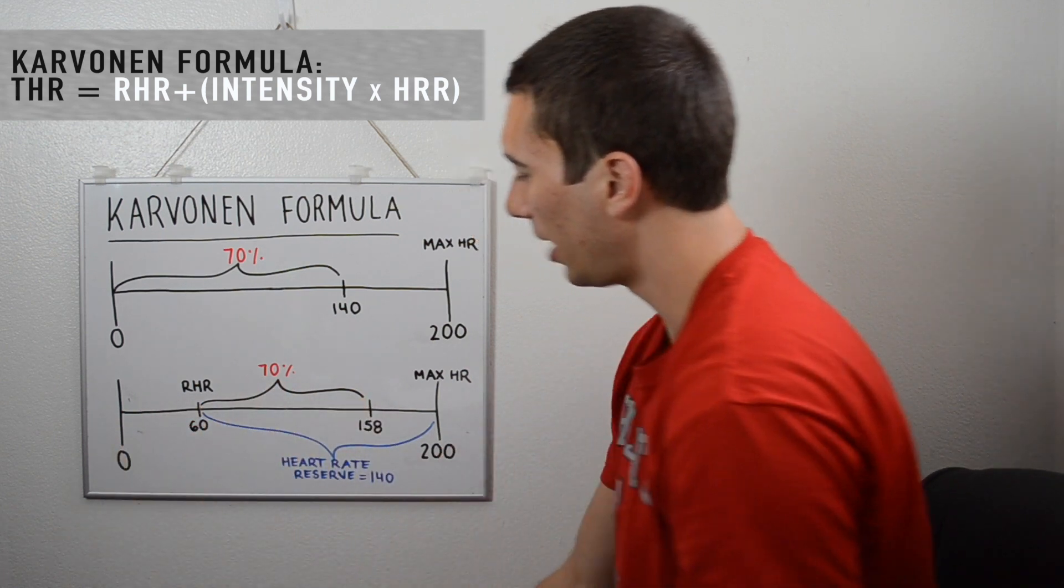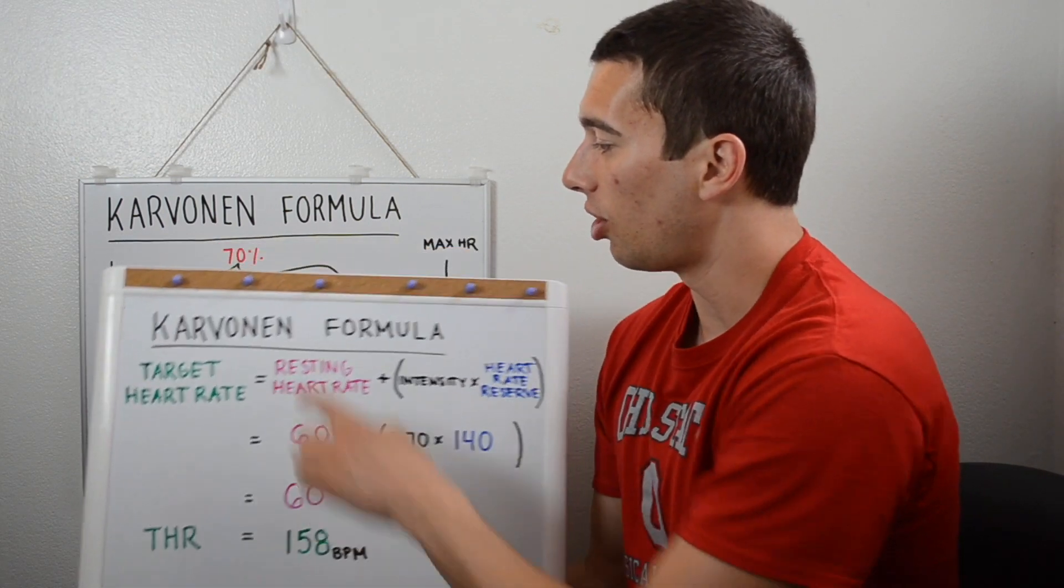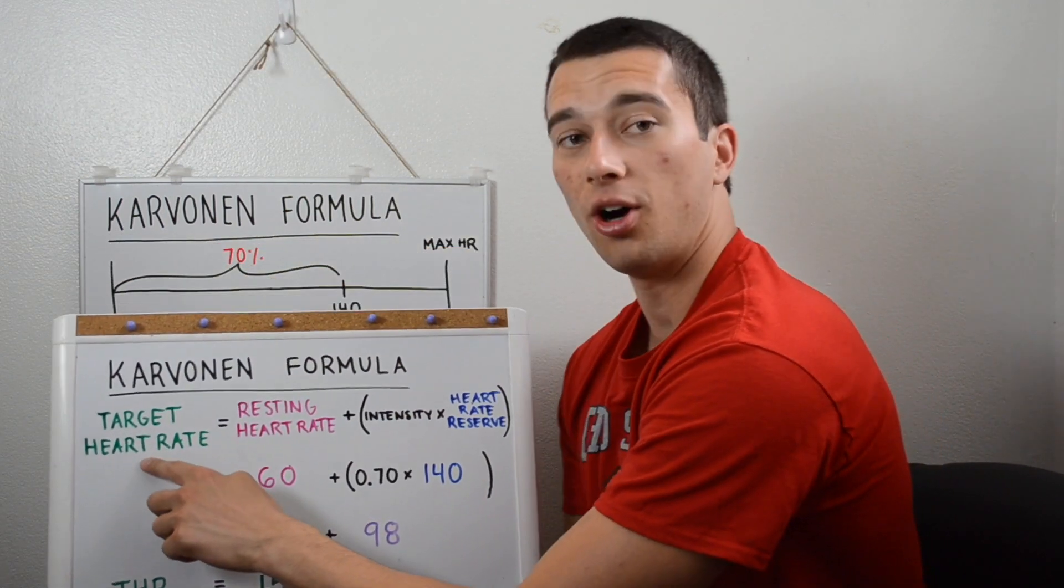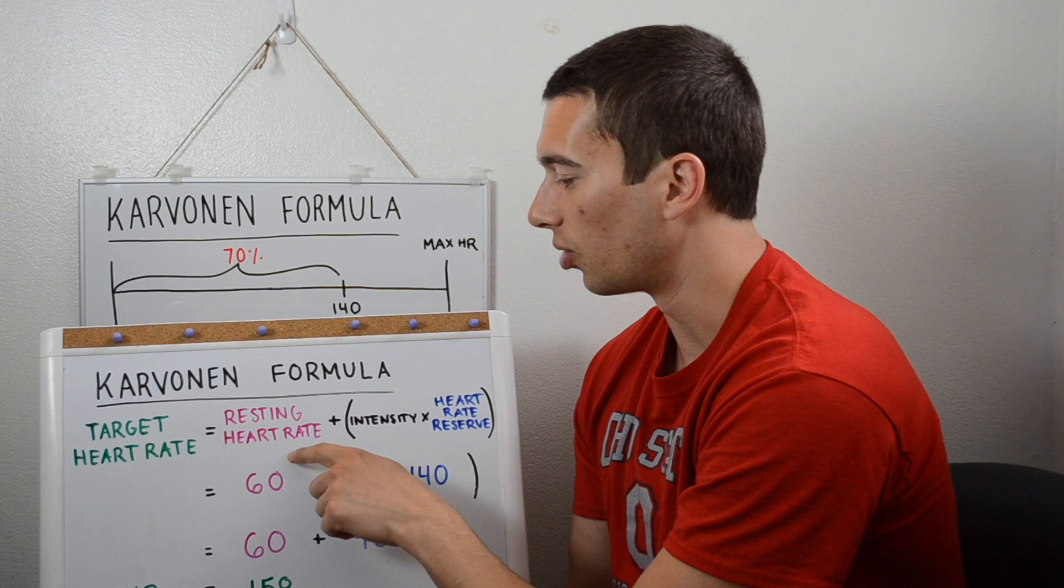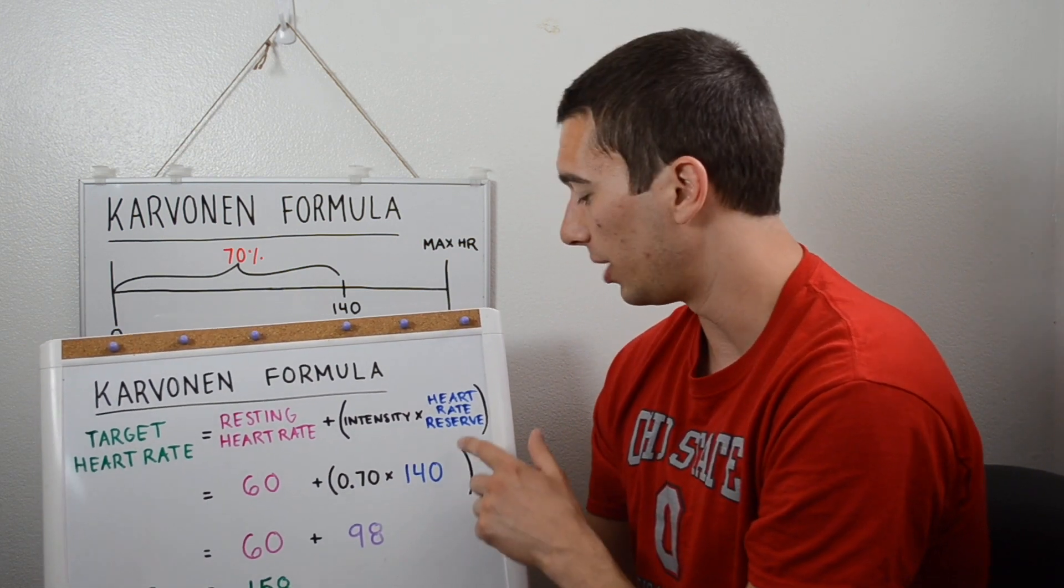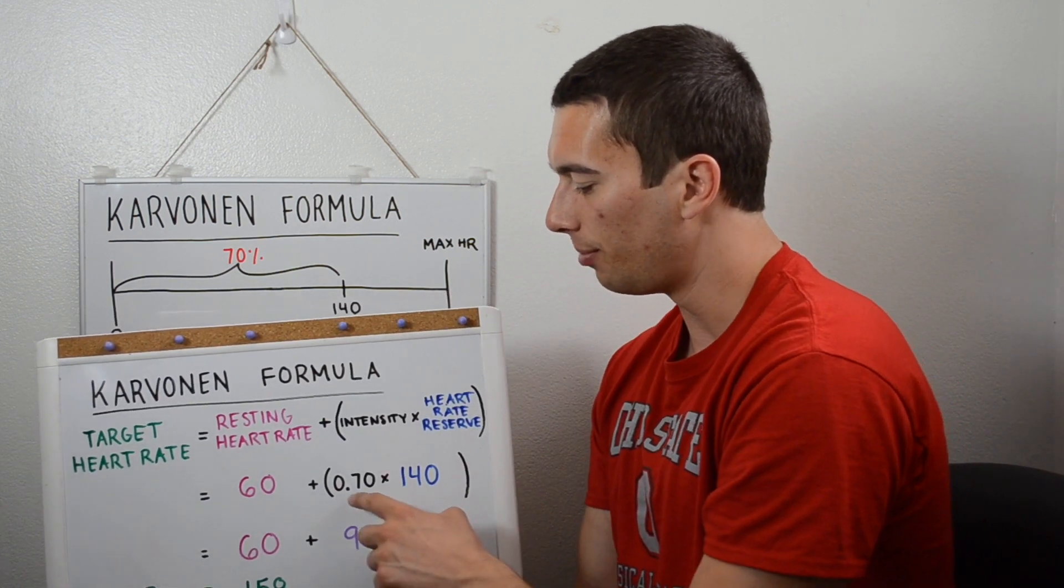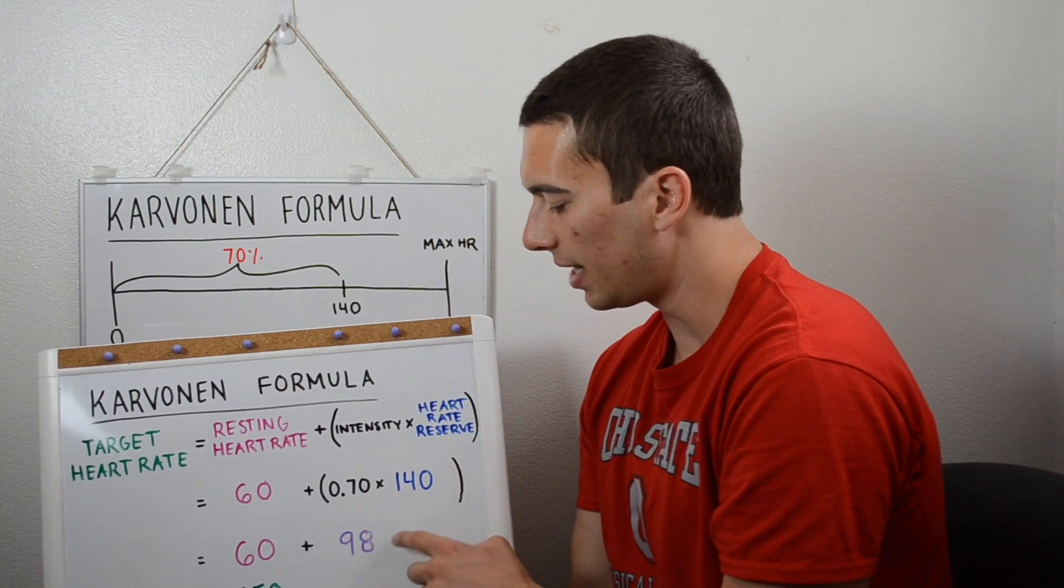And we're going to have to add that back onto the resting. So if we go ahead and look at the formula here, the Karvonen Formula is target heart rate equals resting heart rate plus intensity times heart rate reserve. So we calculated that heart rate reserve is 140 beats per minute. We multiply that by the 0.7, that gets us 98.